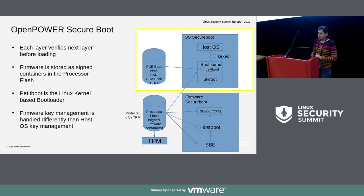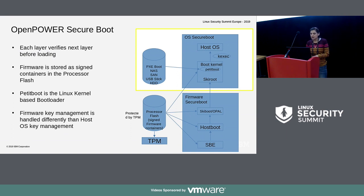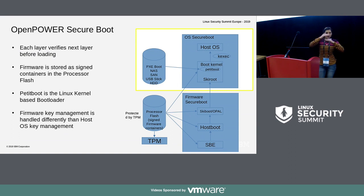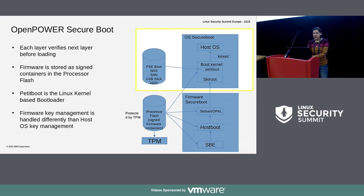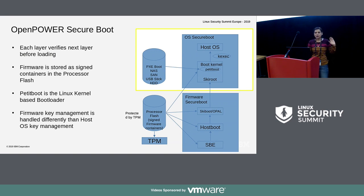For OpenPower secure boot, looking at the block diagram, it starts from the main hardware — the core root of trust — which starts from SBE and loads host boot, skiboot, and skiroot host OS. This is divided into two parts: firmware and host OS. The whole secure boot on OpenPower has two domains: one is firmware secure boot, and once skiboot (also called OPAL) loads the boot loader, we start with the host OS secure boot. Today's focus is mainly on the key management part of the OS secure boot.